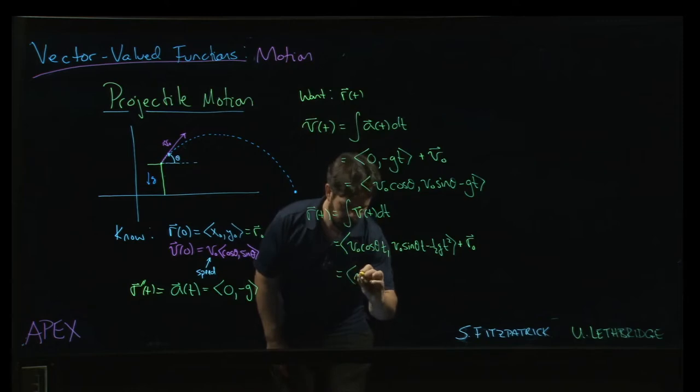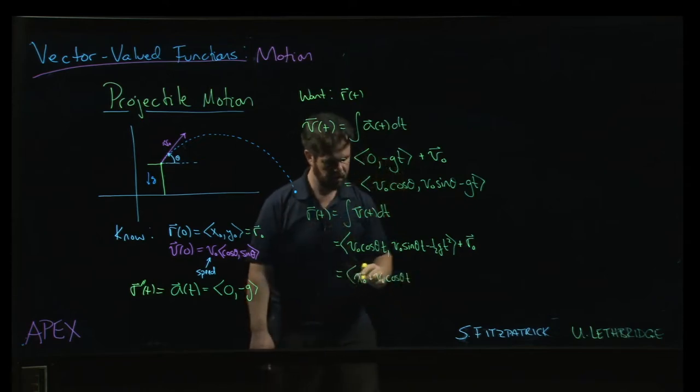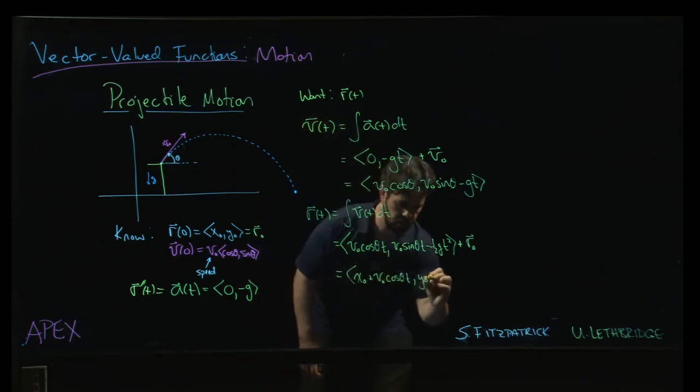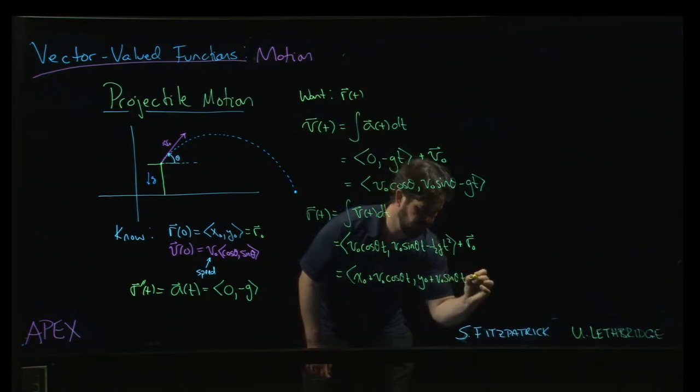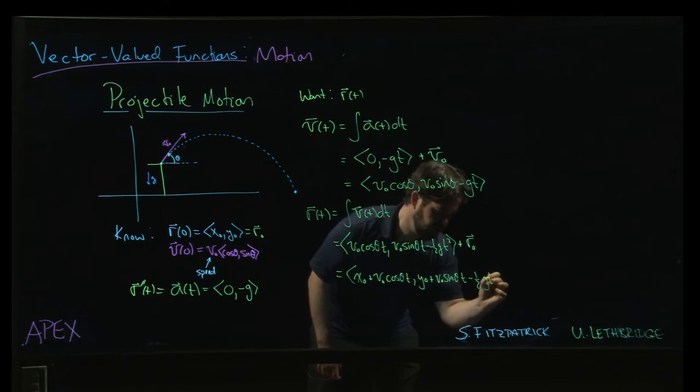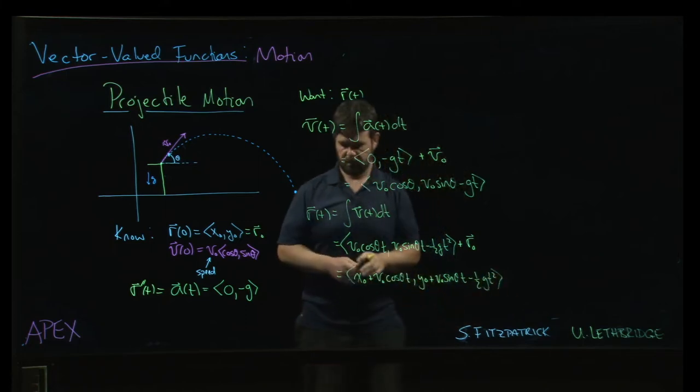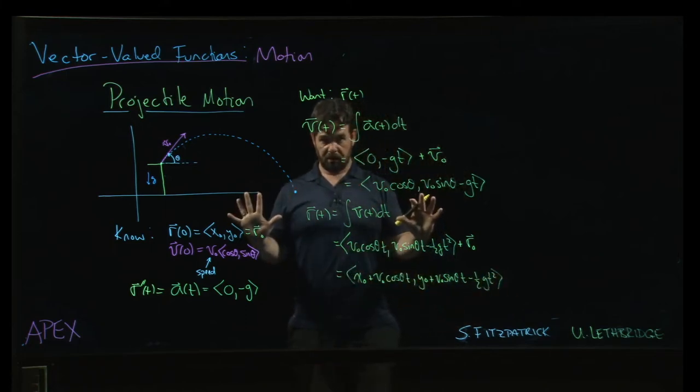So x naught plus v naught times cos theta times t, and then y naught plus v naught sine theta times t minus one half g t squared. That's your position function.